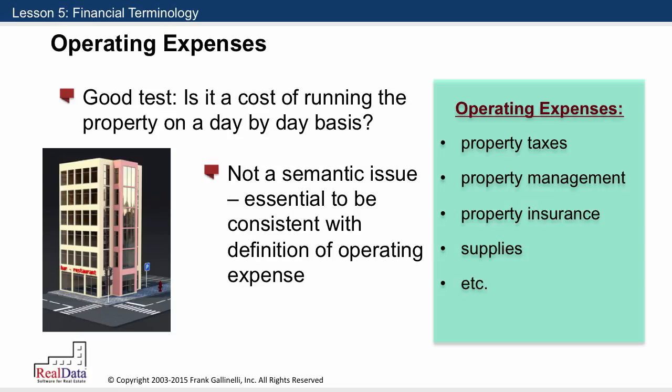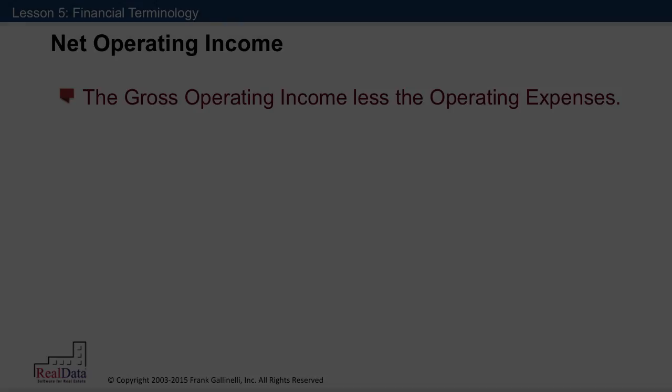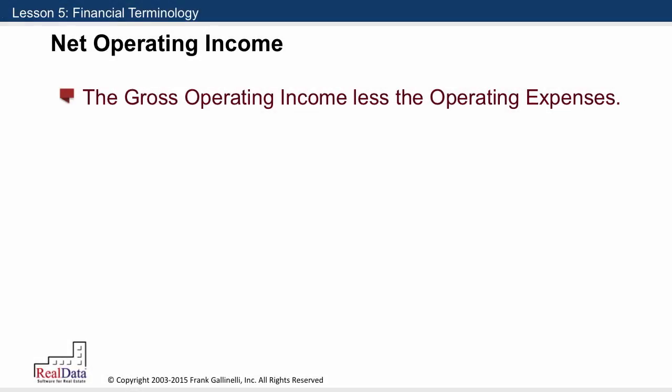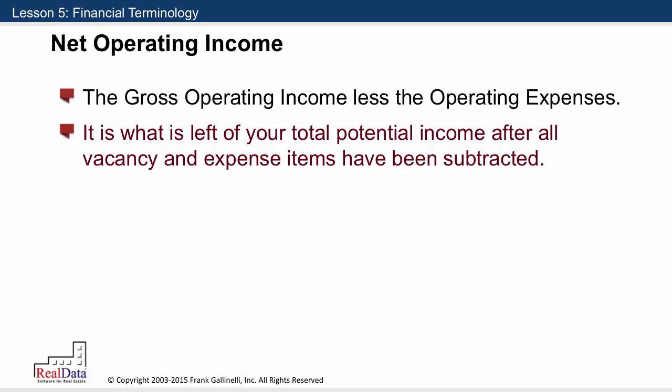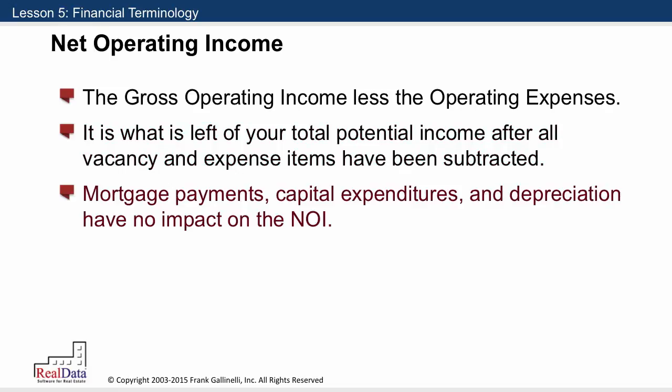The bottom line on our profit and loss statement, on our APOD form, is a very important metric called net operating income. That is the gross operating income less the operating expenses — in other words, what's left over of your total potential income after all vacancy and expense items have been subtracted. I want to remind you that mortgage payments, capital expenditures, and depreciation have no impact on NOI, net operating income.